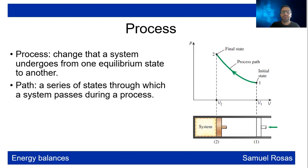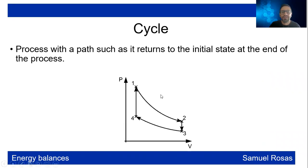A process is when you are changing the system through a series of states. You have an initial state and then a final state, and that is a process. It will follow a process path, a series of states through which the system passes during that process. A cycle is when the process path is going to be closed and the initial and final state is going to be exactly the same.